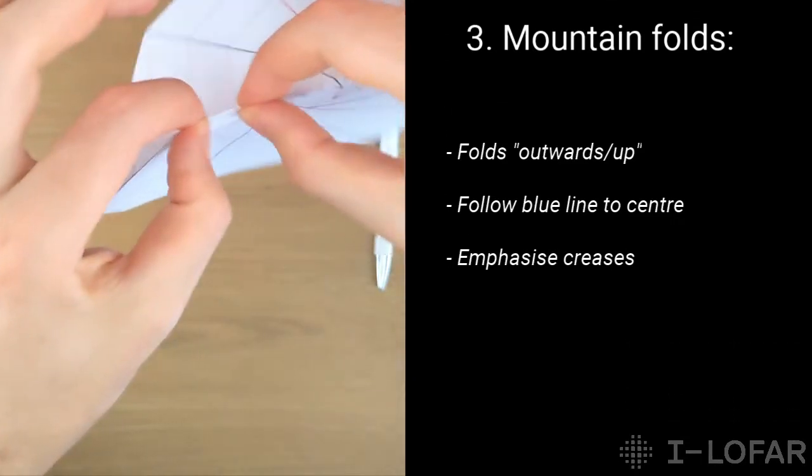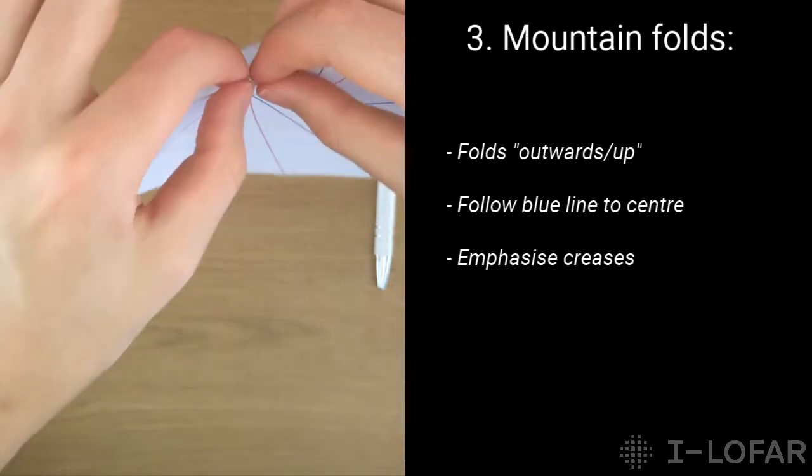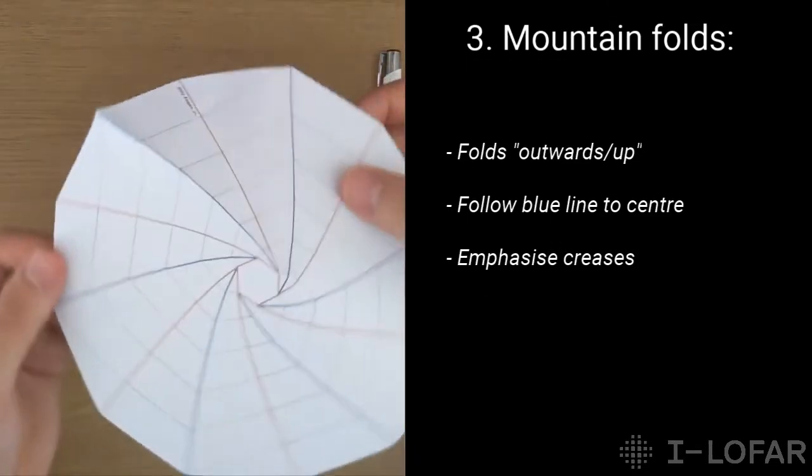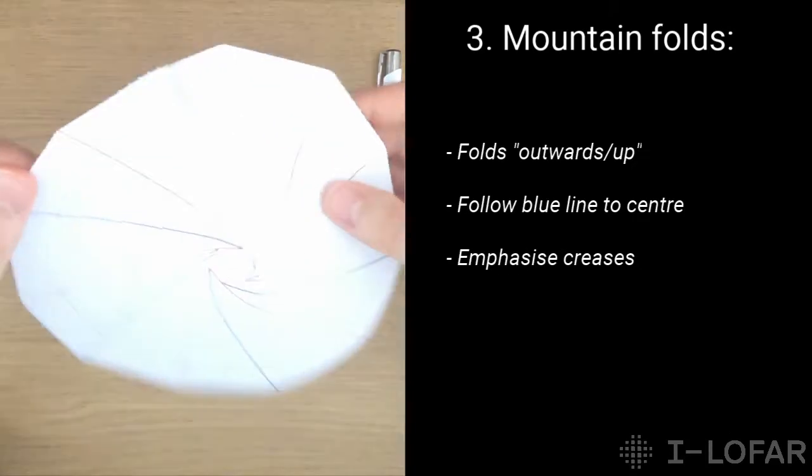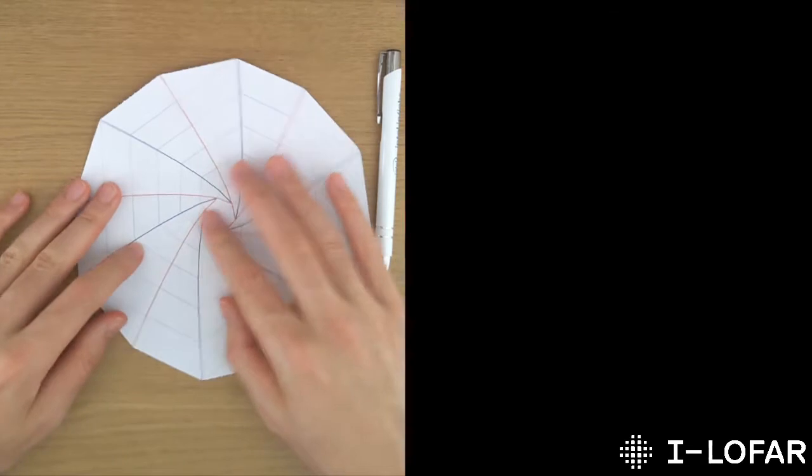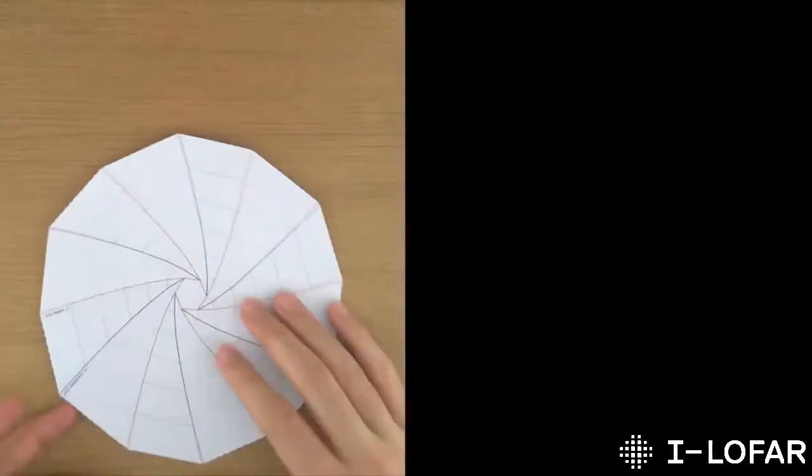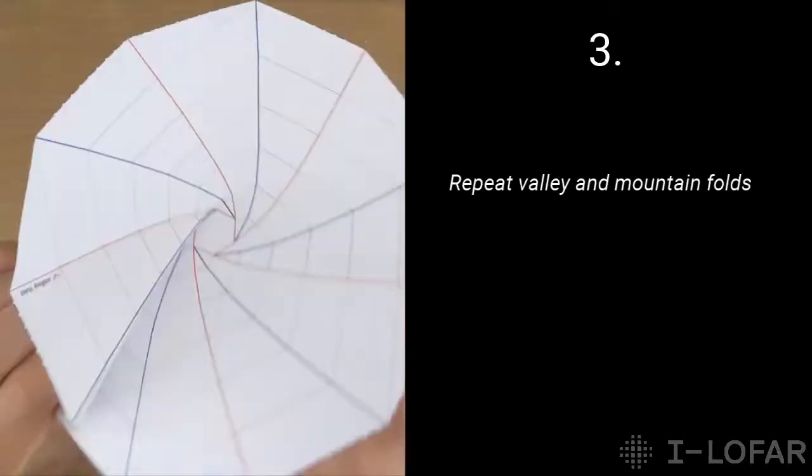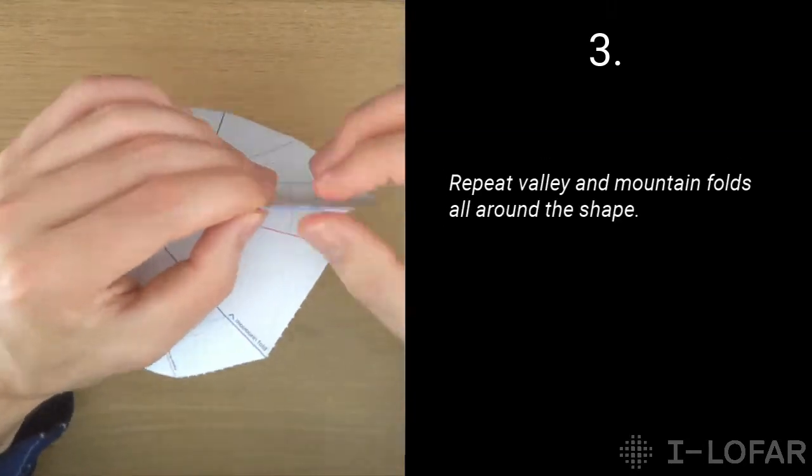And again, you want to emphasize those creases, and follow the line slowly all the way up. And so, you've got valley folds and mountain folds going all the way around the circle. And you're going to want to do all of them. So you can see why it's called the mountain fold, it goes up, and the valley fold goes down. So then you follow the same procedure, all around the circle, and get all the valley folds done, and all the mountain folds done.